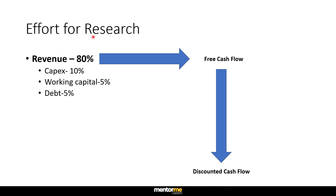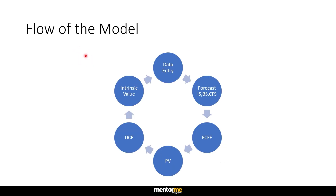80% of your time to make this financial model has to be spent on revenue, because that is where the conviction of the financial model actually comes. When I'm saying revenue, it also means you are understanding at the same time — 10% effort to be put in estimating what kind of assets the company is going to purchase in the coming three to five years. Working capital assumptions, you can spend about 5%. Debt assumptions, about 5%. So that makes 100% of the effort, and you can clearly see where my suggestion lies: in understanding the revenue properly.